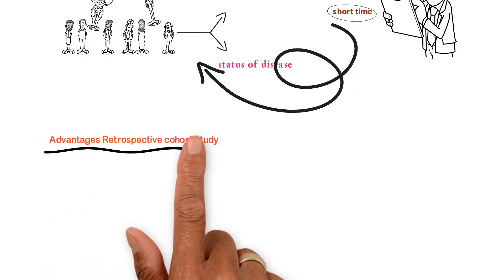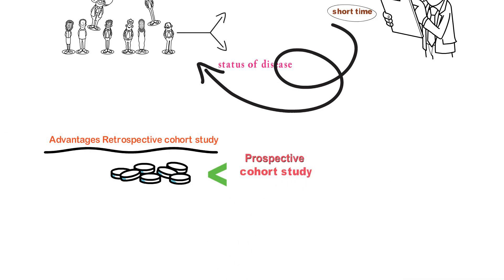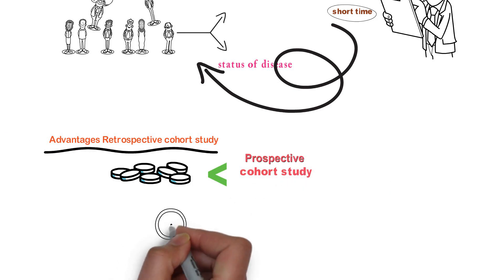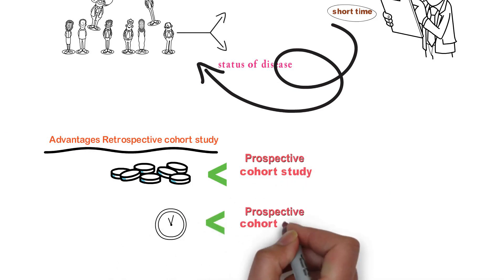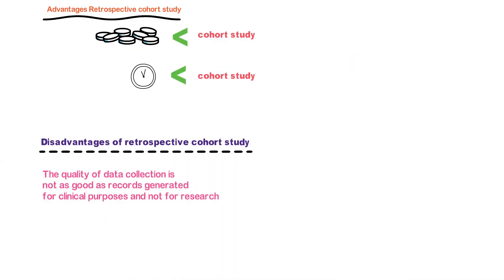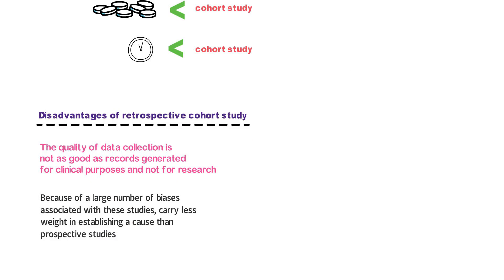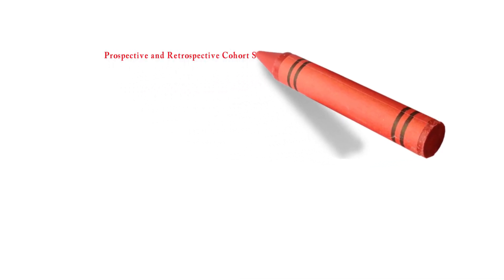Advantages of retrospective cohort study: less expensive compared to prospective cohort study, and completed in much shorter time than a prospective cohort study. Disadvantages: the quality of data collection is not as good, as records are generated for clinical purposes and not for research. Because of a large number of biases associated with these studies, they carry less weight in establishing a cause than prospective studies.